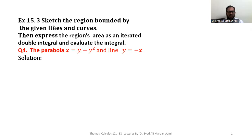The statement of problem is: sketch the region bounded by the given lines and curves, then express the region's area as an iterated double integral and evaluate the integral. The curves given in question are the parabola x = y - y² and the line y = -x.